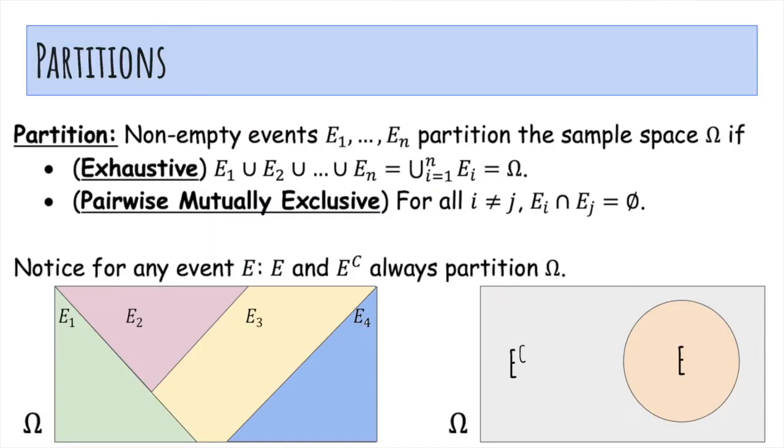This is our definition of a partition. Non-empty events E1 through EN partition the sample space if they're exhaustive, meaning E1 union E2 all the way to EN is omega, so they cover everything, and pairwise mutually exclusive, meaning for any I not equal to J, the EI intersect EJ is the empty set.